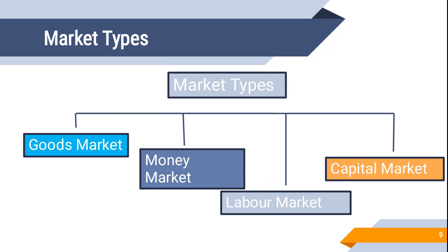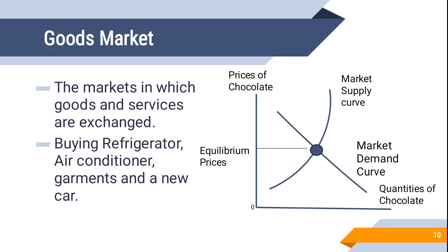Now we have four market types: the goods market, money market, labor market, and capital market. The goods market is a place where we go to buy products physically — for example, buying apples or new shoes.